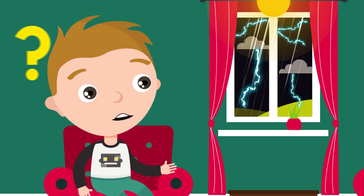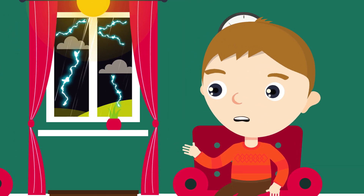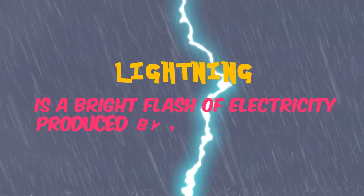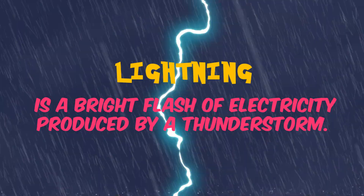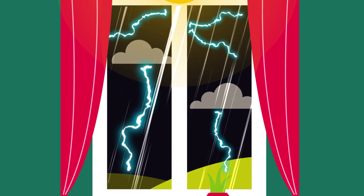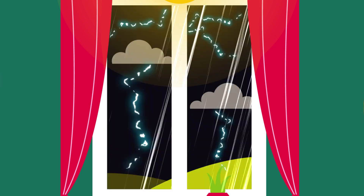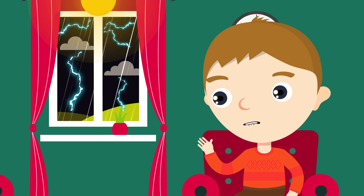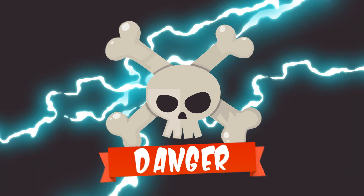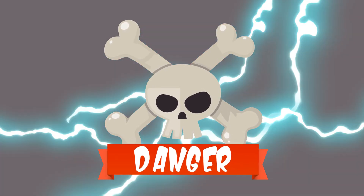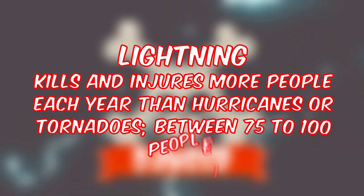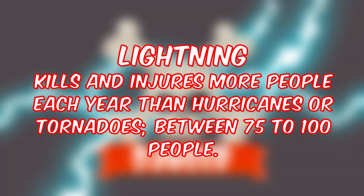So what is lightning? James, you really are full of questions tonight! Lightning is a bright flash of electricity produced by a thunderstorm. Look out the window, you'll see some soon. All thunderstorms produce lightning and are very dangerous. If you hear the sound of thunder, then you are in danger from lightning. Lightning kills and injures more people each year than hurricanes or tornadoes.